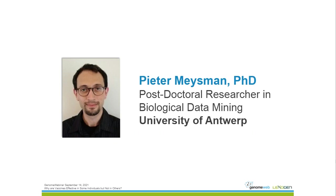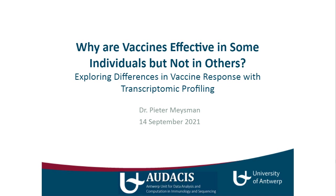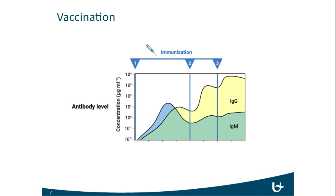Thank you. Welcome everyone. Today we are going to talk about why some vaccines are effective in some individuals but not in others. I'm going to talk about some of the studies that we did, where we explored differences in vaccine responses using transcriptomic profiling. The first thing I want to point out is we need to define what a vaccine response is.